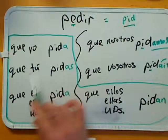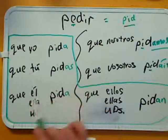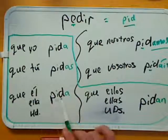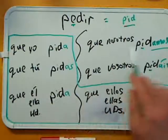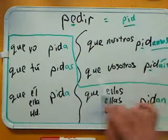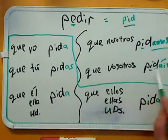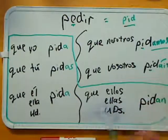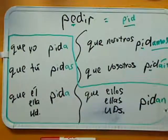So the full conjugation is: que yo pida, que tú pidas, que él / usted pida, que nosotros pidamos, que vosotros pidáis, y que ellos / ustedes pidan.